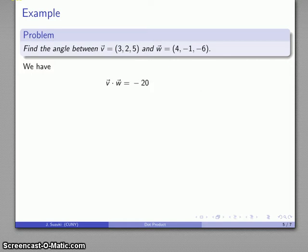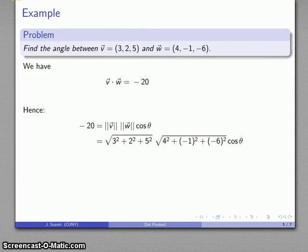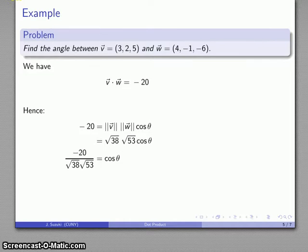I get negative 20 as my dot product. And what I have is that that dot product is the product of the magnitudes of the two vectors times the cosine of the angle between them. And so I can find the magnitudes of each vector. So again, that's going to be the square root of the sum of the squares of the components. This vector v has magnitude square root of 3 squared plus 2 squared plus 5 squared. And this vector w has magnitude 4 squared plus negative 1 squared plus negative 6 squared. After all the dust settles, I end up with the cosine of the angle between them is negative 20 over square root 38 times square root 53, which tells me that the angle between them is the arc cosine of some expression. And I can find this numerically. This is about 2.037 radians.